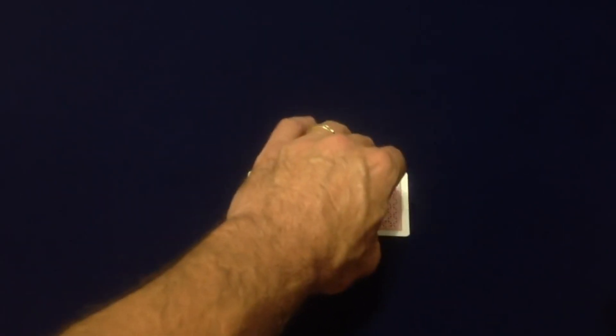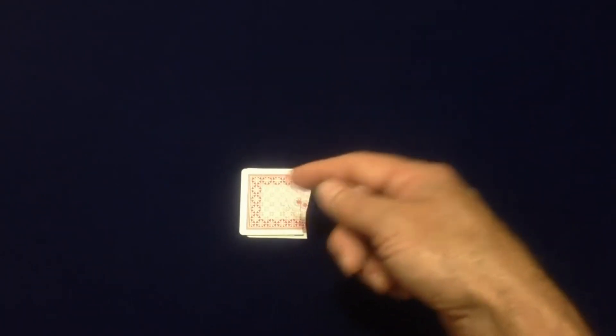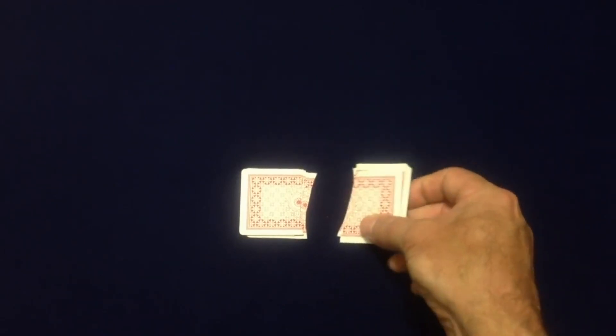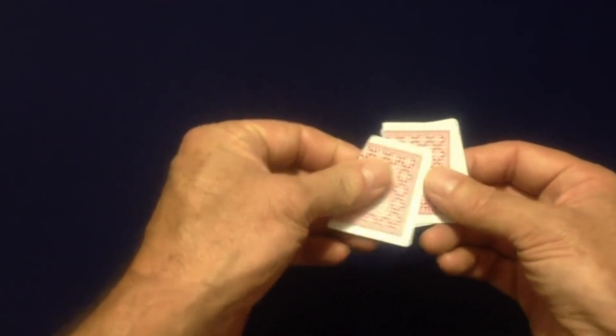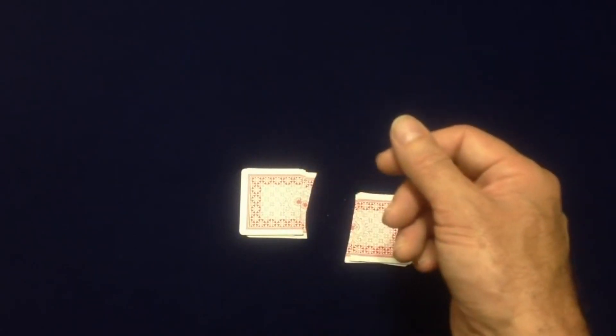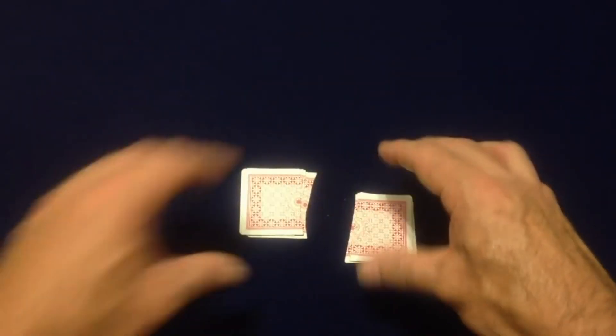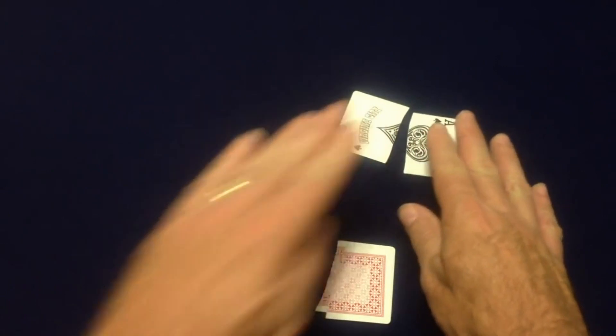This is why it's fun to do with a group of people because your spectators are actually going to choose which pile you use and you're going to spell out the words will the cards match. For example, let's say your spectators picked this pile so you just spell out the word will W-I-L-L and then you can snap your finger or do the magic wave or whatever type of effects you want to use. And then you just turn your cards over and they match.